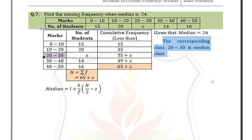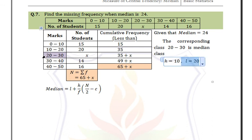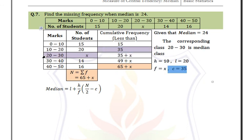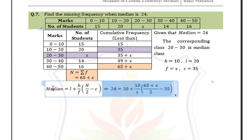In the median class 20–30: H = 10, the lower limit L = 20, and the frequency of this class is X, so F = X. The cumulative frequency of the previous row is 35, so C = 35. Substitute into the formula: 24 = 20 + (10/X) × ((65 + X)/2 − 35).